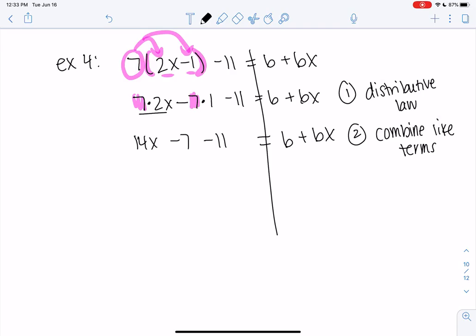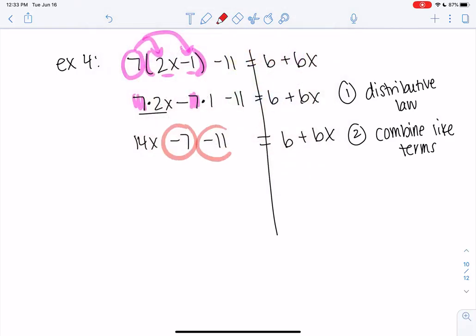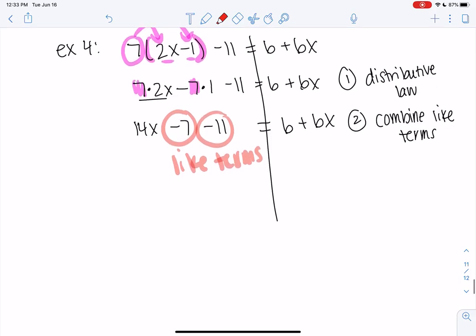If I had 14x and 12x, right, those are like terms. If I had 5y and 3y, those are like terms. But in this case, our like terms are the negative 7 and the negative 11. They have to be on the same side. So 6 is not part of this. Like terms are on the same side. So if I do negative 7 and negative 11, that's more negative. And I end up with negative 18.